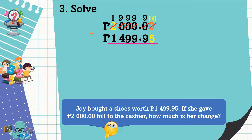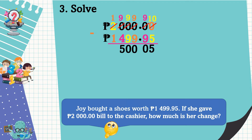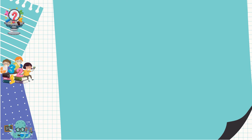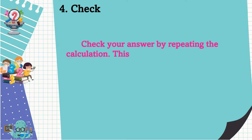Let's subtract: 10 minus 5 is equal to 5. 9 minus 9 is equal to 0. 9 minus 9 is equal to 0. 9 minus 9 is equal to 0. 9 minus 4 is equal to 5. 1 minus 1 is equal to 0. 1 minus 1 is equal to 0. Don't forget to put the decimal point and the peso sign in the difference. Therefore, the change of Joy is 500 pesos and 5 centavos. The last step is to check by repeating the calculation — this is one way to verify your answer.